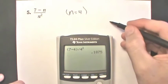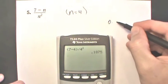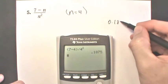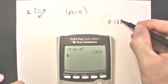We're going to round that to the nearest thousandth, so we're going to call it 0.188.